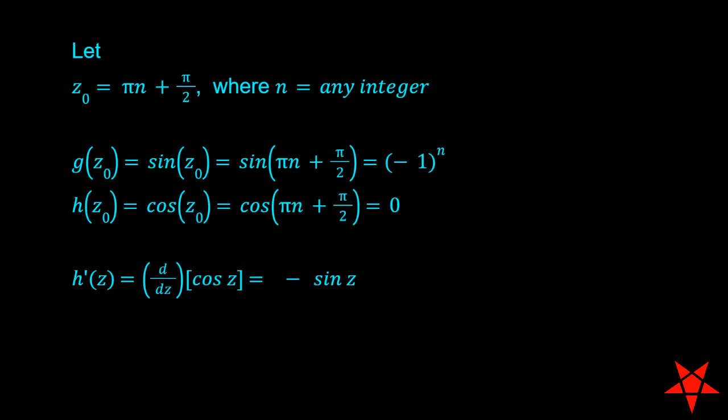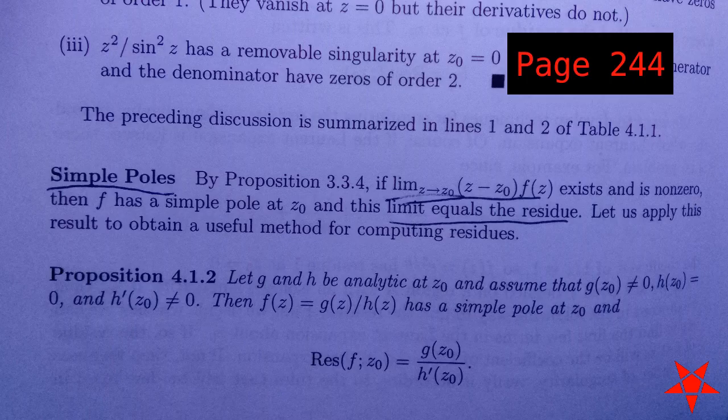Taking the derivative of h(z) with respect to z gives us h'(z) equals negative sine of z. Evaluating h' at z₀ equals πn + π/2 gives us (-1)^(n+1).